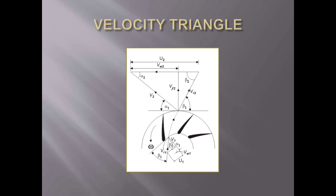Where, Vw2 is the whirl component of absolute velocity of jet at the outlet, u2 is the tangential velocity of impeller at outlet. Vw1 is the whirl component of absolute velocity of jet at inlet and u1 is the tangential velocity of impeller at inlet.